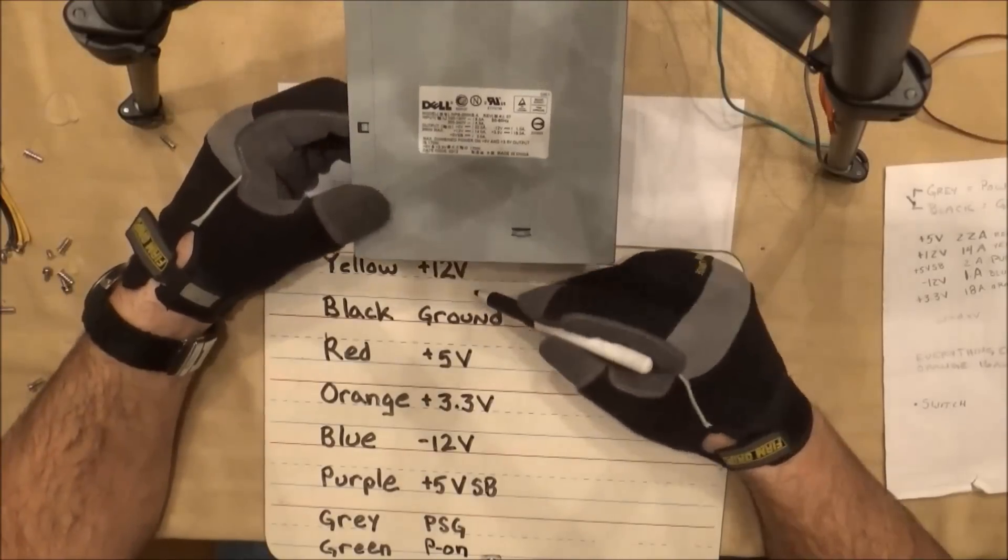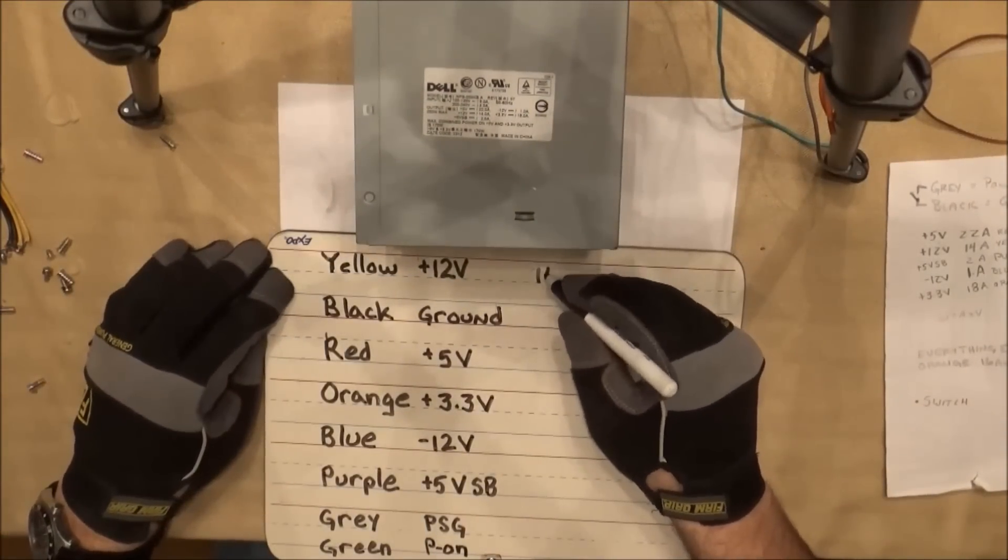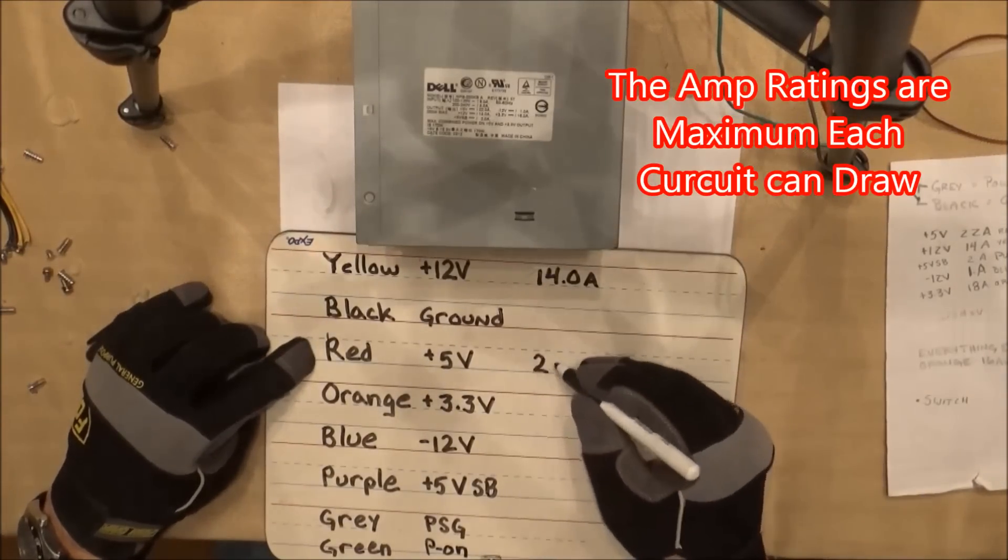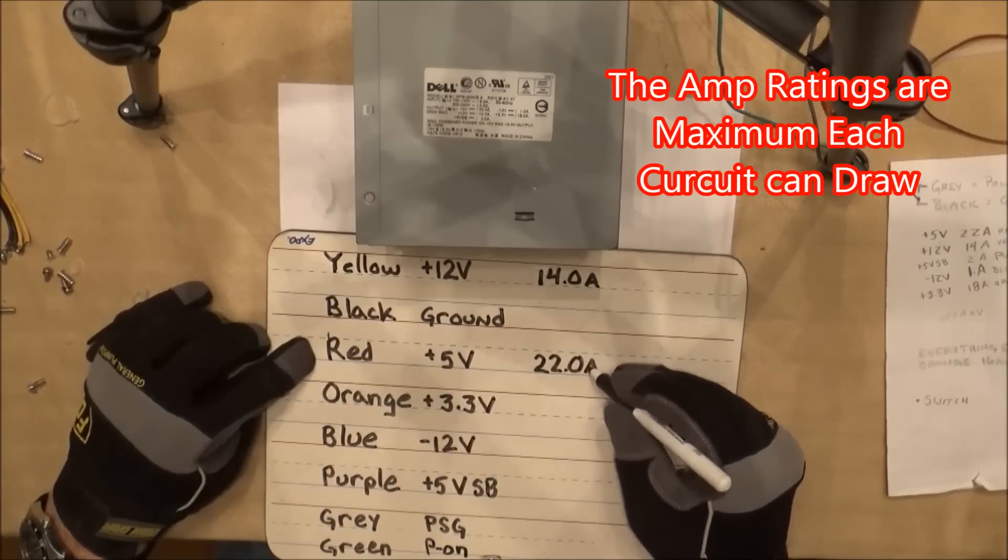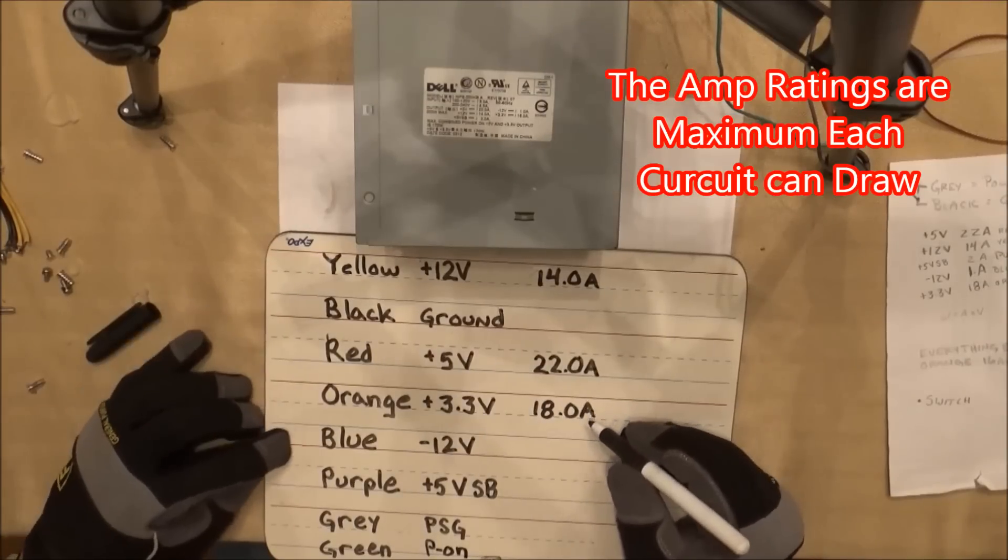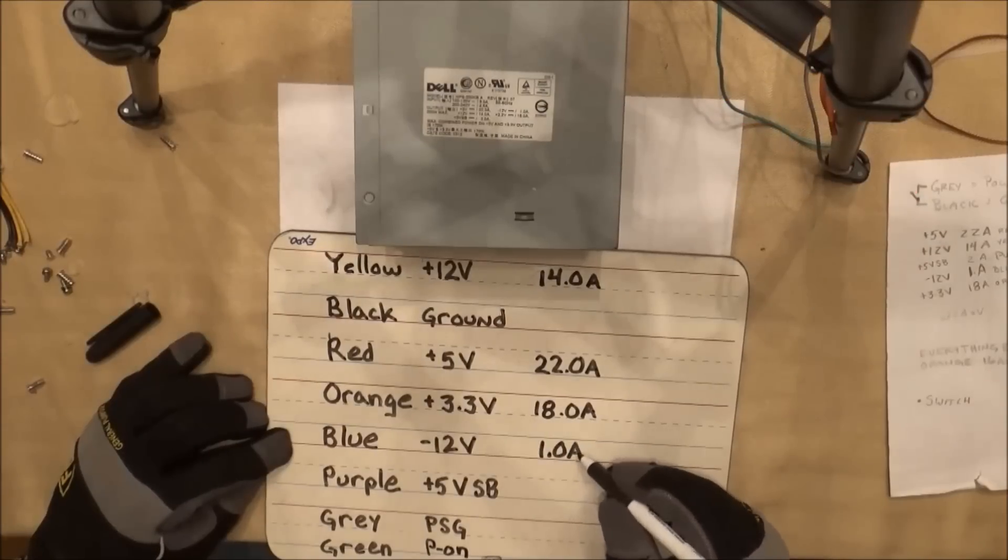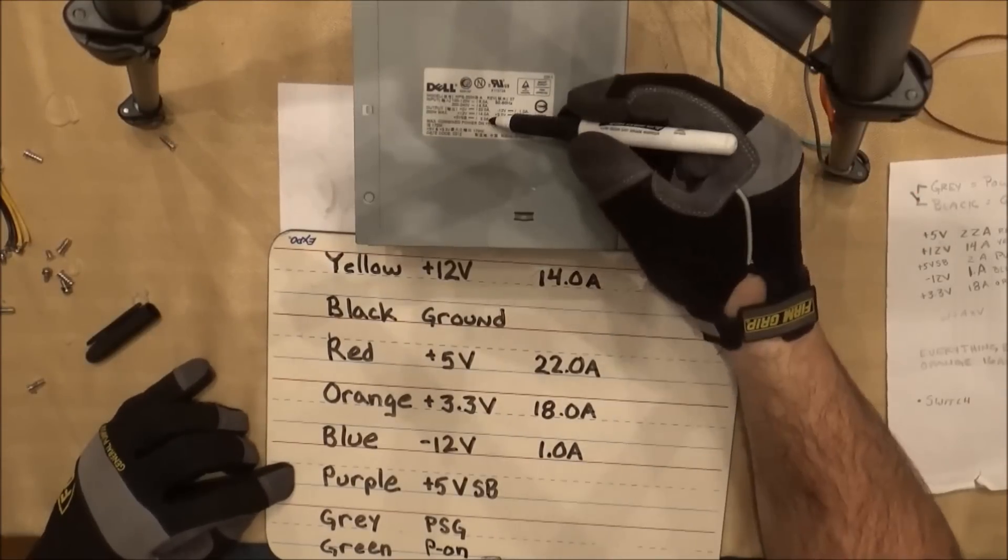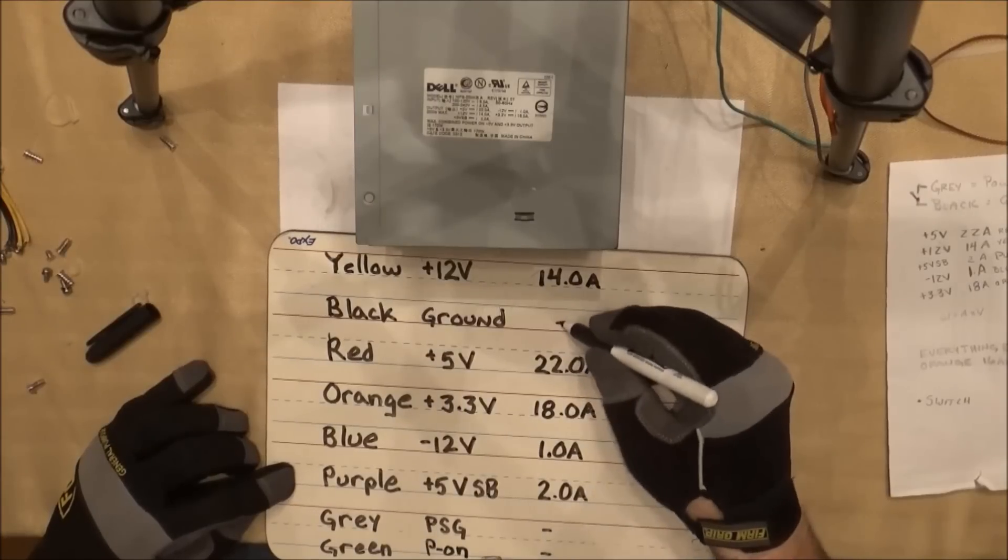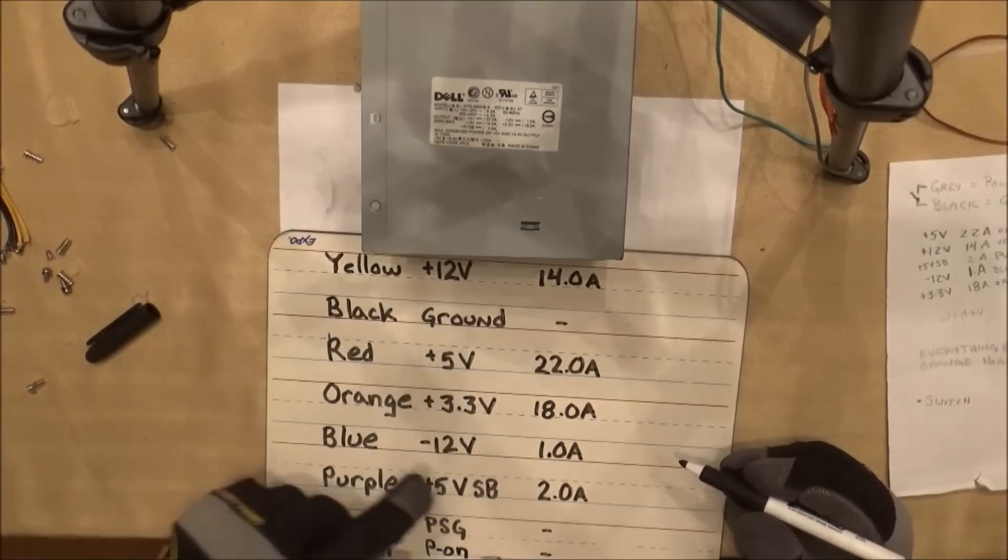Now I use the power supply nameplate to determine how many amps each voltage draws. The yellow 12V draws 14A, red draws 22A, orange draws 18A, blue negative 12V carries 1A, purple around 2A, and the rest do not have an amp rating. These amp ratings will be very important when we decide how many wires we actually need for our power supply.